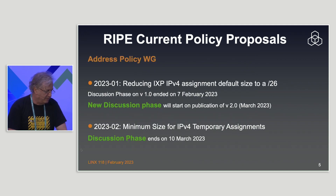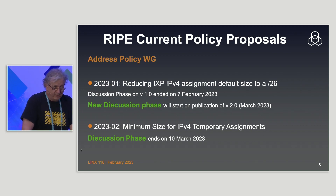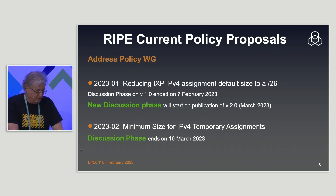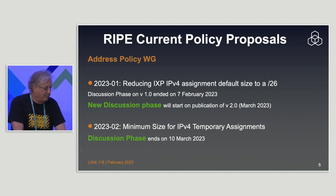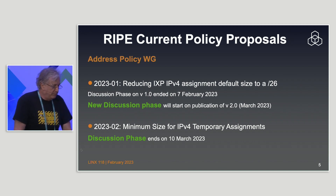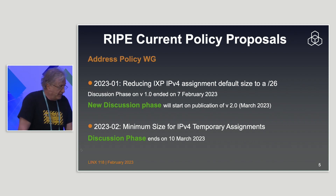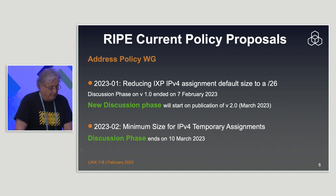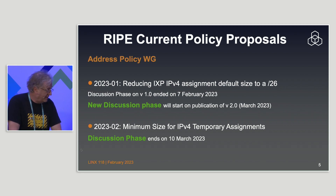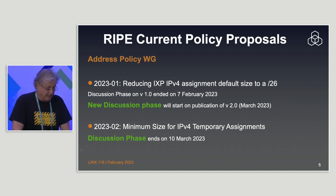Policy number one: 2020-01. Policies are named according to the year and number of the policy in that year. This one is entitled 'Reducing IXP IPv4 Assignment Default Size to a /26.' Once upon a time, when there was lots of IPv4, if you were an IXP you could ask for IPv4 address space and be allocated a /24, which could be upgraded to a /23 or even /22 depending on how big you were.